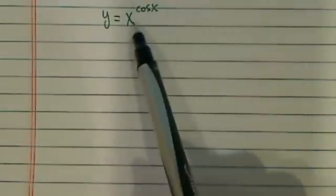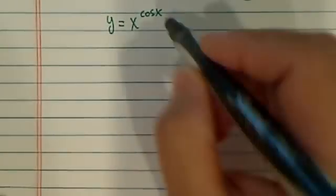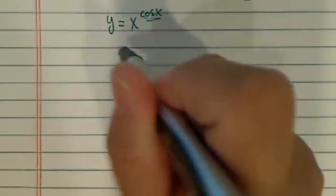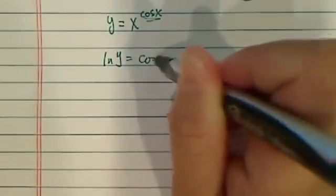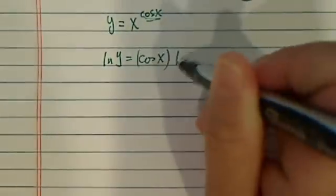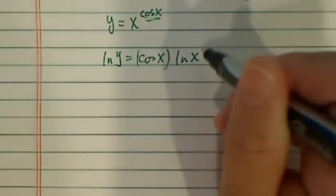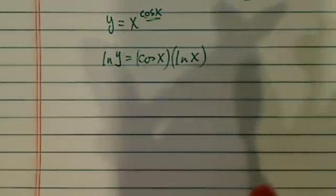To find the derivative of x to the cosine x power, we've got to use log to get the exponents done. So let's try that. Natural log of y is equal to cosine of x times natural log of x. So all I did was take the natural log on both sides.